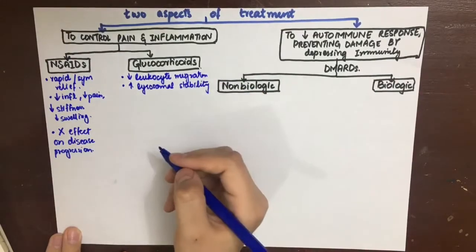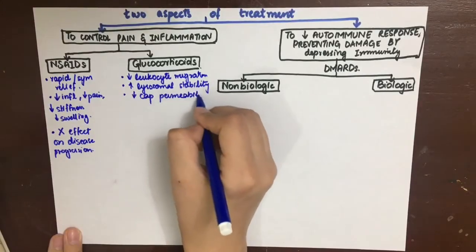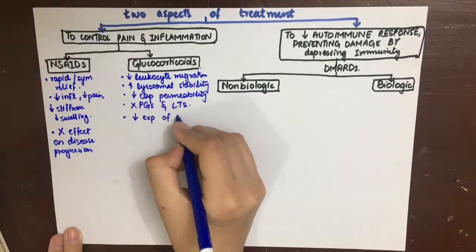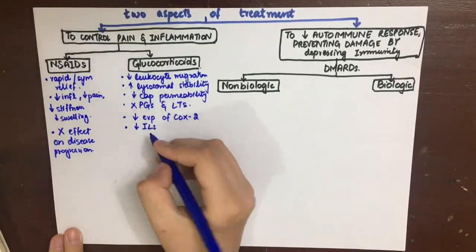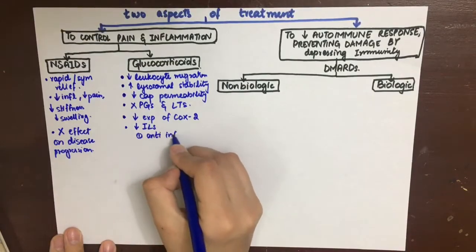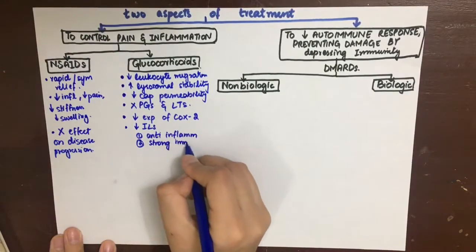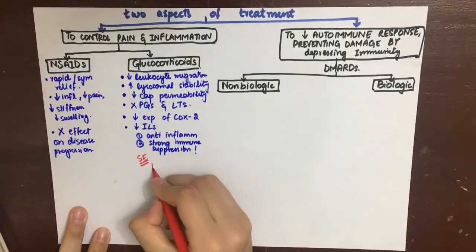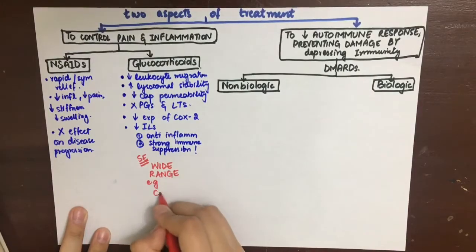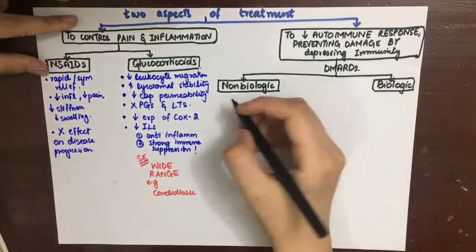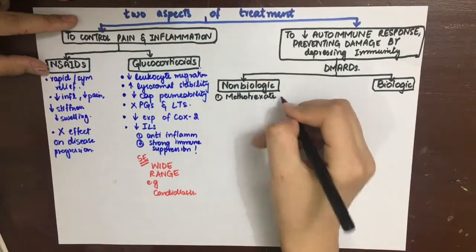Glucocorticoids act mainly as suppressants of the immune response and as anti-inflammatories by decreasing leukocyte migration, increasing lysosome stability, decreasing capillary permeability, and decreasing the release of prostaglandins and leukotrienes. Expression of COX-2 is inhibited, which is needed in inflammation. Interleukins are also decreased. Side effects include a very wide range such as candidiasis or thrush.